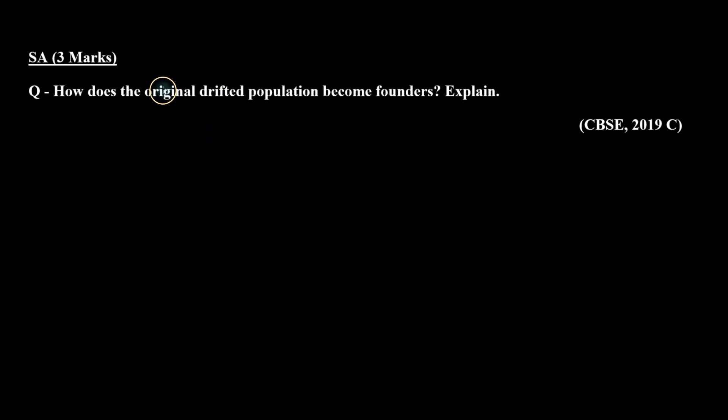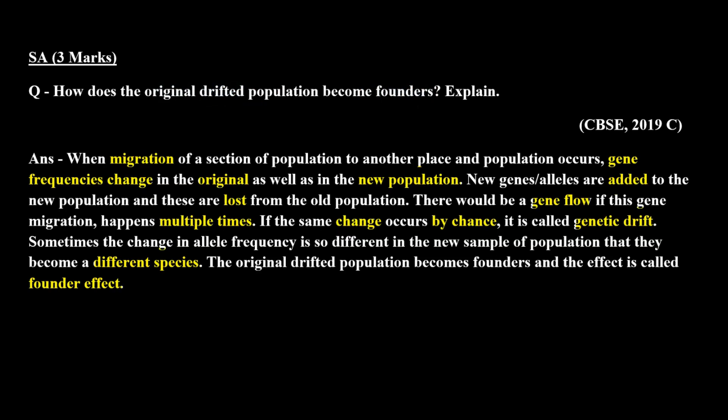Is question mein pooch raha hai jo original population drift hoti hai wo founders population kaise ban jati hai. Jab ek population ek jagha se doosri jagha pe migrate karti hai to jeans ka addition aur loss hota hai. Jab population ek jagha se jayegi to us jagha pe jeans aur alleles ka loss hoga, aur jab wo nai jagha pe jayegi to us jagha pe jeans aur alleles ka addition hoga.